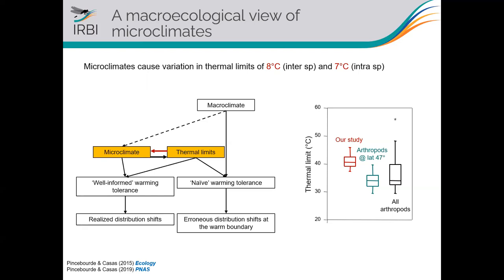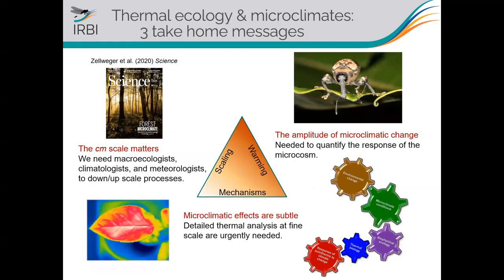What we advocate for is using not macroclimate but microclimate conditions to compute well-informed warming tolerance and get more accurate distribution shift predictions. The problem is that microclimate temperature is not known for most species, and placing fine loggers everywhere in the world seems difficult. This is where biophysical models — such as NicheMapper produced by Michael Kearney — are really helpful to generate the microclimate temperature patterns we are missing for most organisms.